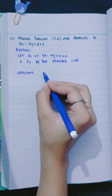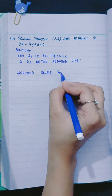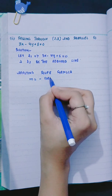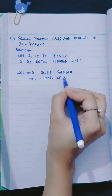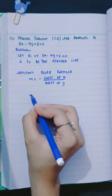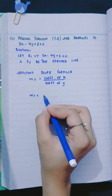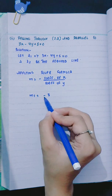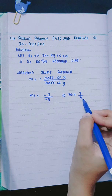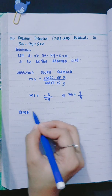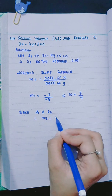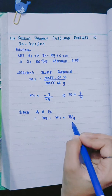Applying the slope formula: m equals minus coefficient of x divided by coefficient of y. Here coefficient of x is 3 and coefficient of y is minus 4, so m1 equals minus 3 divided by minus 4, which gives m1 equals 3 by 4. Since l1 is parallel to l2, therefore m2 equals m1 equals 3 by 4.